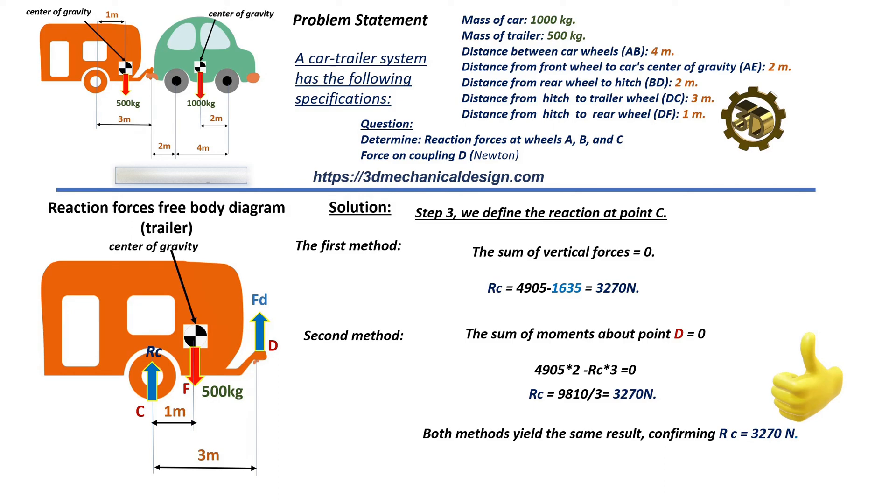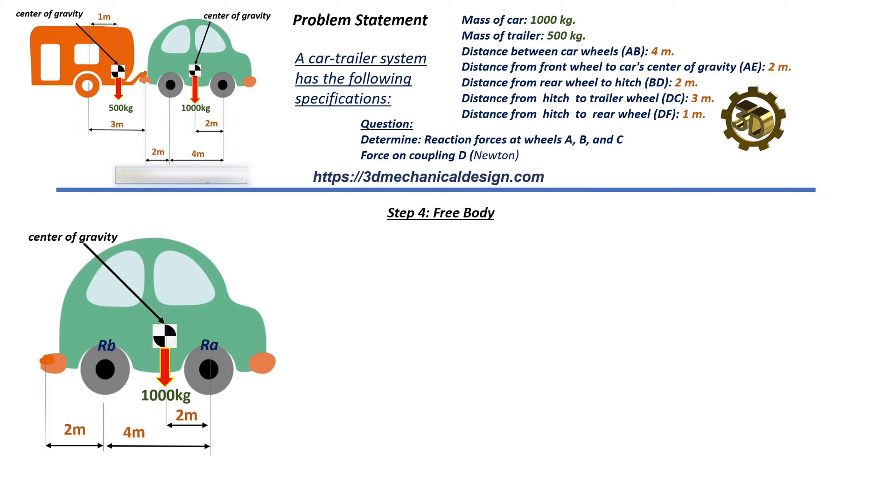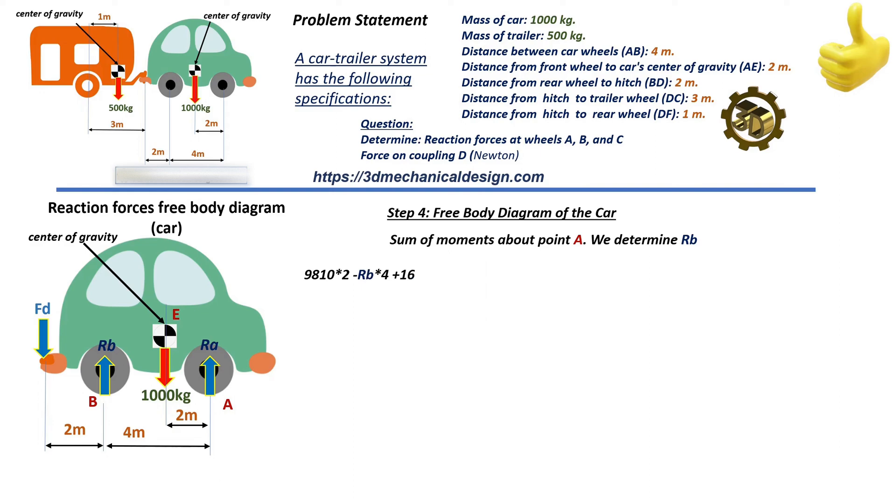Step 4: Free Body Diagram of the Car. Sum of moments about point A. We determine RB. RB equals 9,810 times 2 plus 1,635 times 6 divided by 4 equals 7,357.5 newtons.